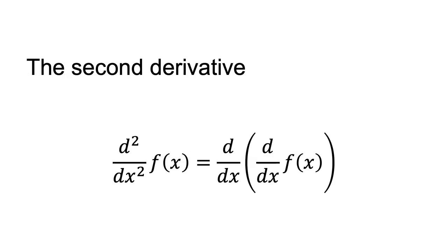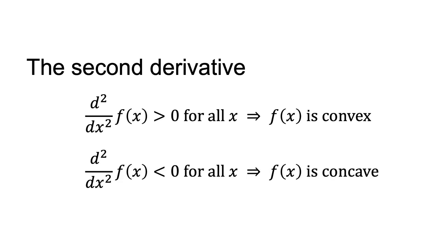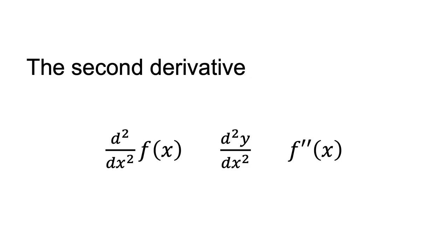The second derivative of a function is a measure of the curvature of the function, or the rate of change of the slope. We can calculate it by taking the derivative of the first derivative. We can use the second derivative to determine whether a function is concave or convex. A function is concave if the second derivative is negative and convex if the second derivative is positive. The second derivative is written as d squared/dx squared f(x), or d squared y/dx squared, or f double prime x.